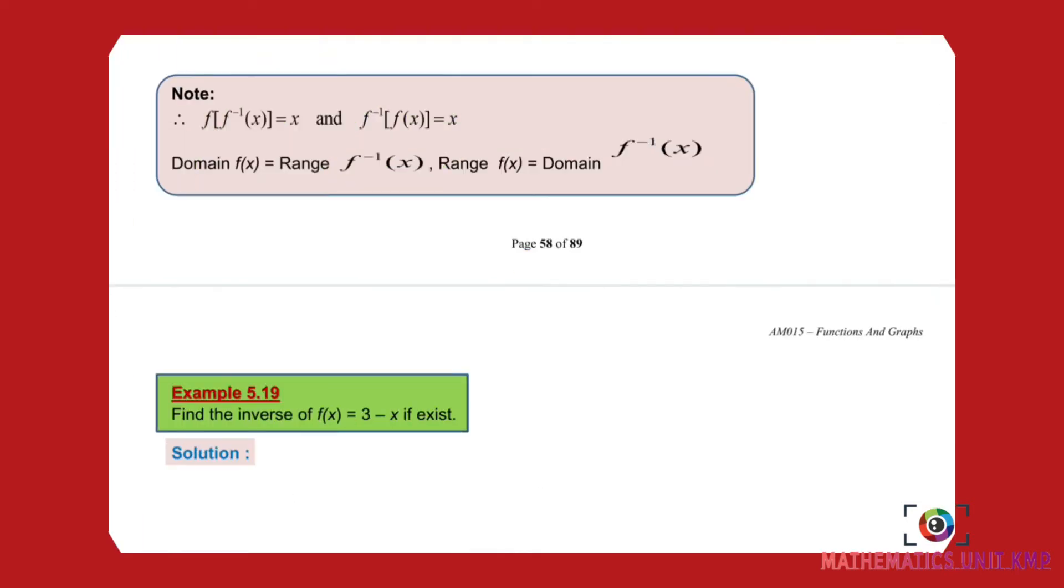Do you understand that? As you can read here, f(f inverse x) equals x and f inverse(f(x)) equals x. Because you have learned before, the composite of the function and its inverse should get x only, vice versa. So automatically the domain of f(x) becomes the range of f inverse x, and vice versa. The domain of f(x) is the same as the range of f inverse x, and the range of f(x) will become the domain of f inverse x.